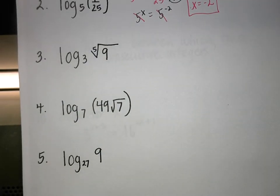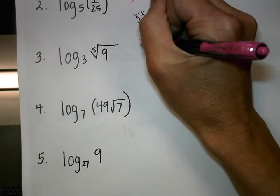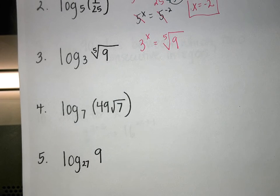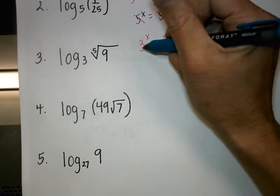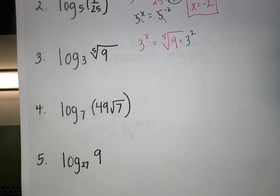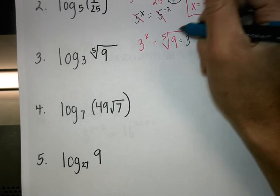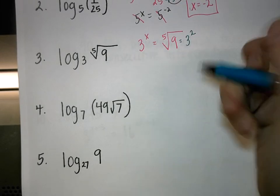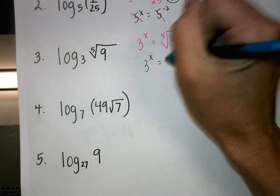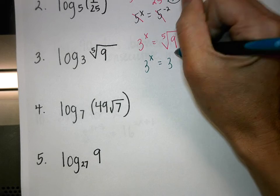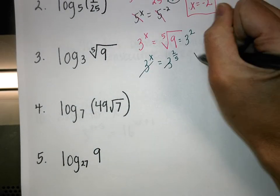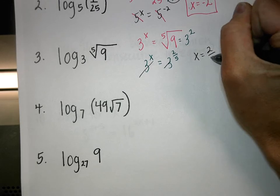Number 3: 3 to what power equals the 5th root of 9? We're looking at base 3. 9 can be written as 3 to the second power, so we change this to power form and end up with 3 to the X power equals 3 to the 2/5. Eliminate your bases and X equals 2/5.